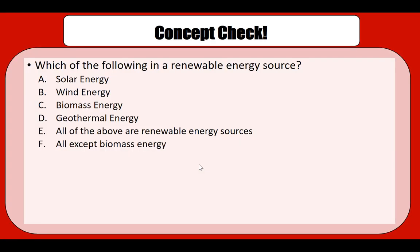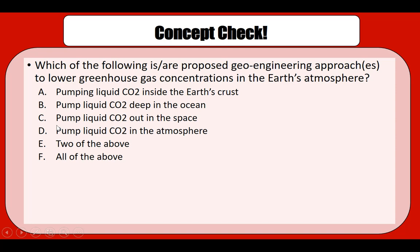Let's do a quick concept check. Which of the following is a renewable energy source? Correct — all of the above are renewable energy sources. Which are proposed geoengineering approaches to lower greenhouse gas concentrations? The two correct answers are A and B: pumping liquid CO₂ inside the Earth's crust, and pumping liquid CO₂ deep in the ocean. That concludes our mitigation strategy overview.